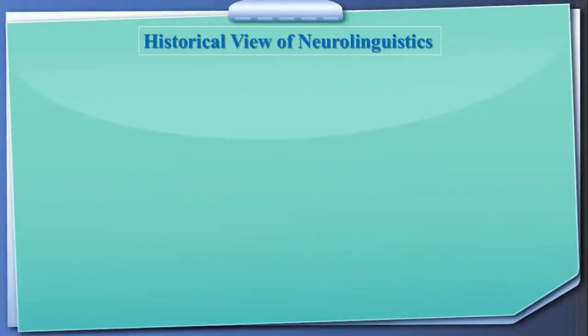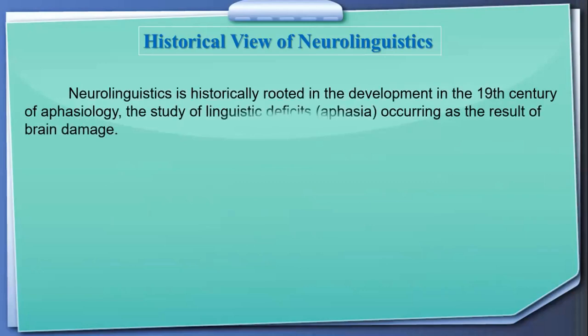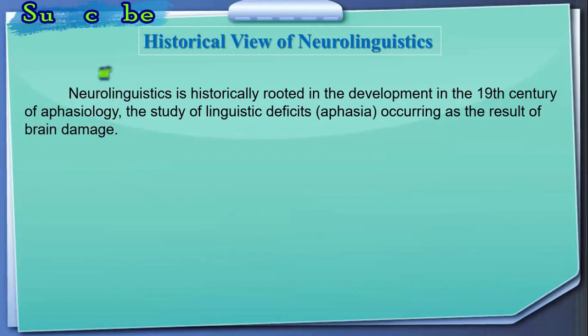Here we are going to talk about the historical view of Neurolinguistics. Neurolinguistics is historically rooted in the development in the 19th century of aphasiology — the study of linguistic deficits, called aphasia, occurring as a result of brain damage. Neurolinguistics began when researchers studied linguistic deficits, and the connection to brain damage marked the beginning of the field.